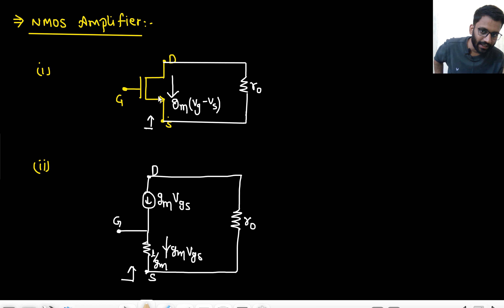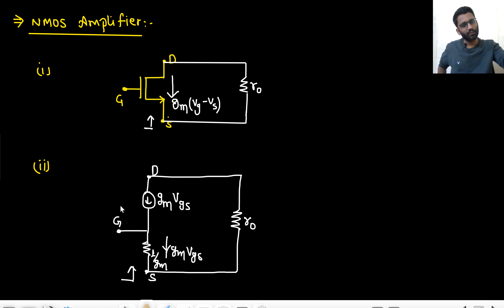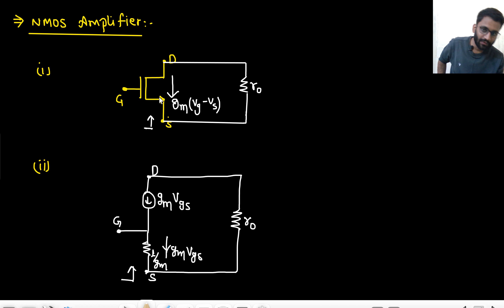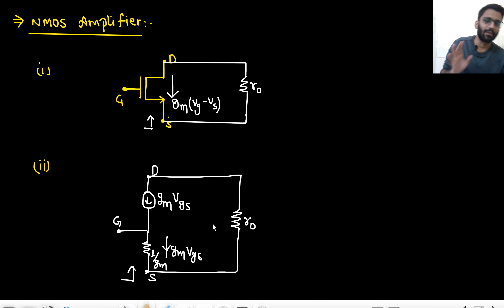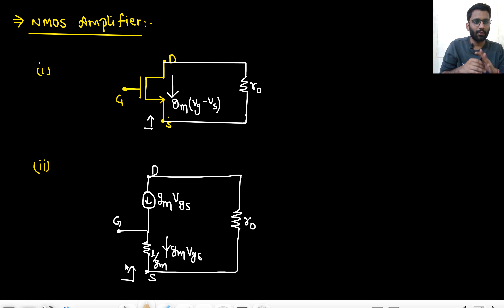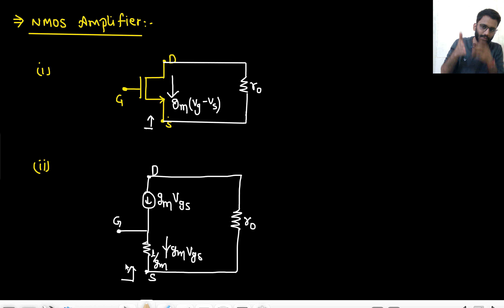Wherever this arrow is present on the MOSFET symbol, it shows 1/gm. In case of both NMOS and PMOS, if this arrow is there, it means from source to gate there is 1/gm, and from source to drain there is R0. So: gmVgs current is flowing, R0 is there, from source to gate we have 1/gm, and from source to drain we have R0.